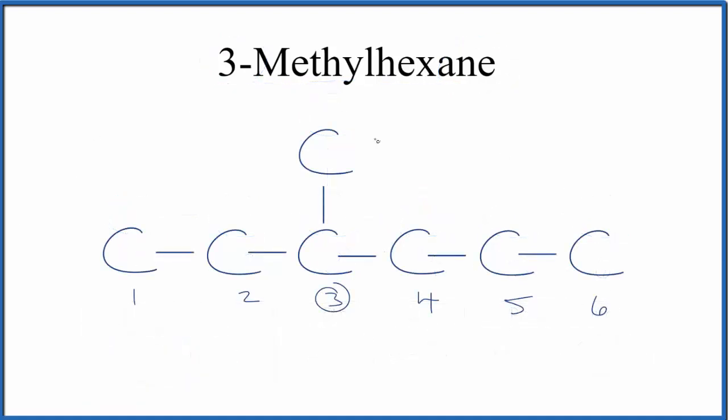And because we have an alkane here, each carbon would be bonded to four things. So we'd have 1, 2, 3 hydrogens here, 1, 2 here, and so on.